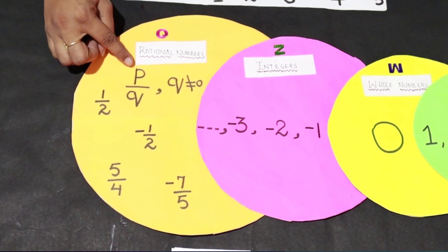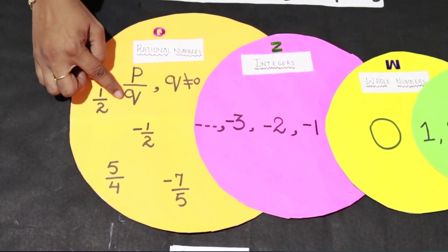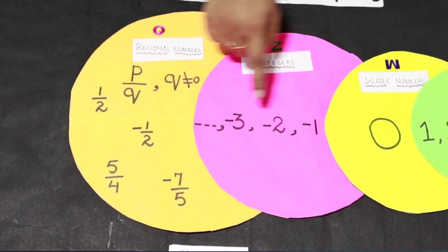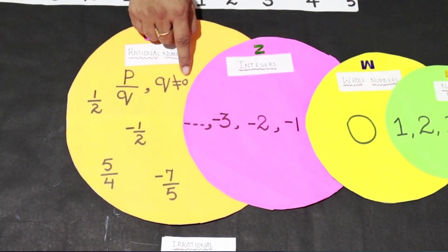The numbers which can be written in the form of P by Q where P and Q are integers, Q is not equals zero.